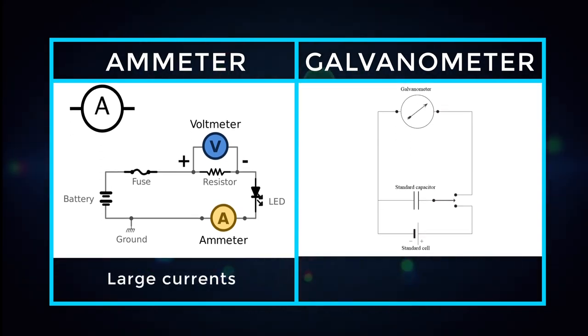Ammeter is to measure large currents, whereas galvanometer is to measure small currents.